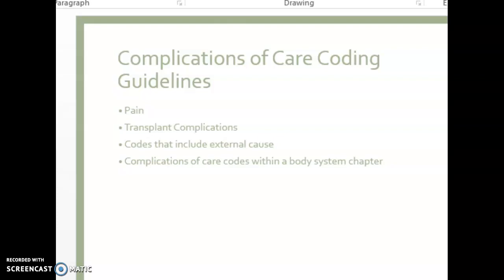There are some complication codes that include both the nature of the complication and the external cause in one code. For example, T83.81XA is for embolism due to genitourinary prosthetic device, implant, or graft — on page 1142 in my book. That single code tells us what the complication was and what caused it. Sometimes we'll have to code those each separately; it just depends on how the code description reads.